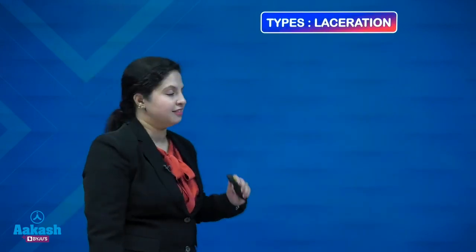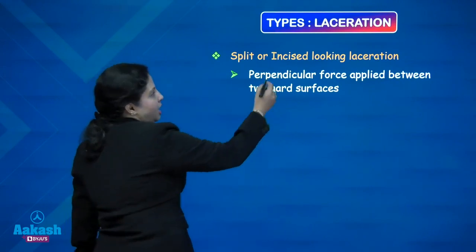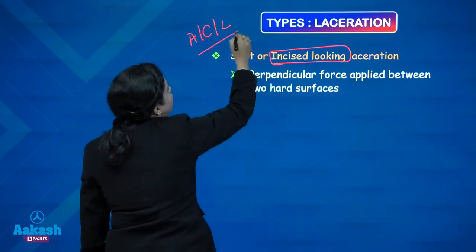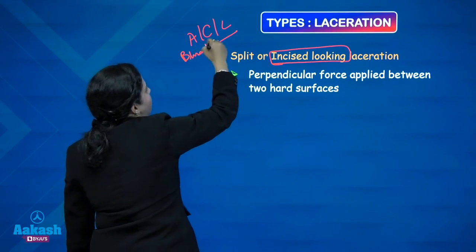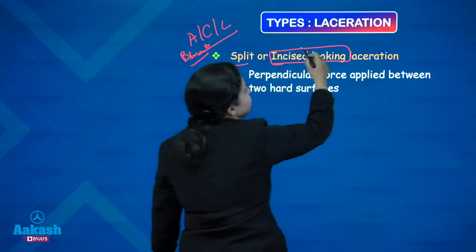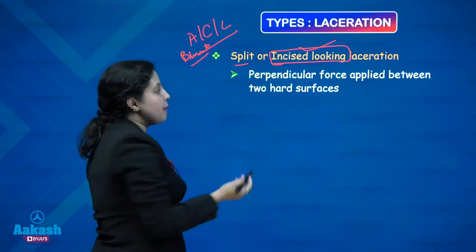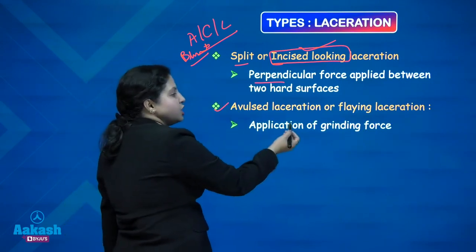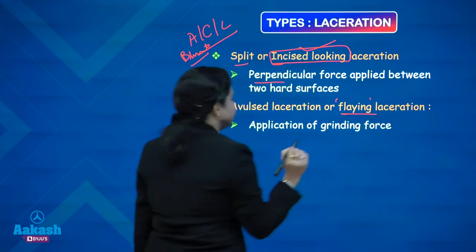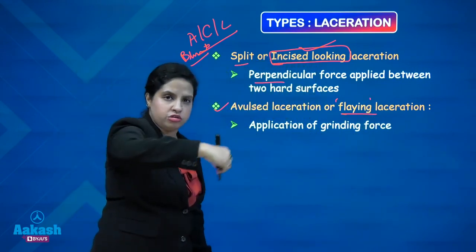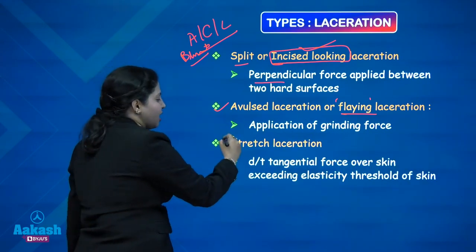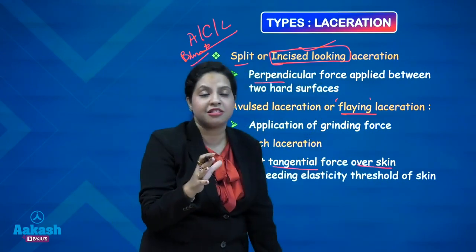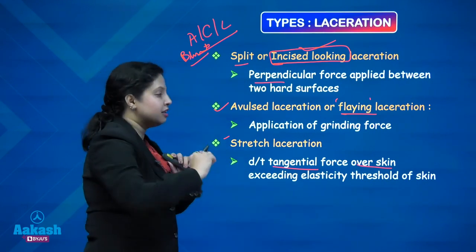Talking about different types of lacerations: first, split or incised looking — please pay attention, it is incised looking. Abrasion, contusion and laceration are all caused by blunt force trauma. But if a laceration is split or incised looking, it happens because of a perpendicular force applied between two hard surfaces. Second, evulsed or flaying laceration — the term is 'fling' — caused by the application of a grinding force. Third, stretch laceration is due to a tangential force over the skin exceeding the elasticity threshold of the skin, hence it tears.